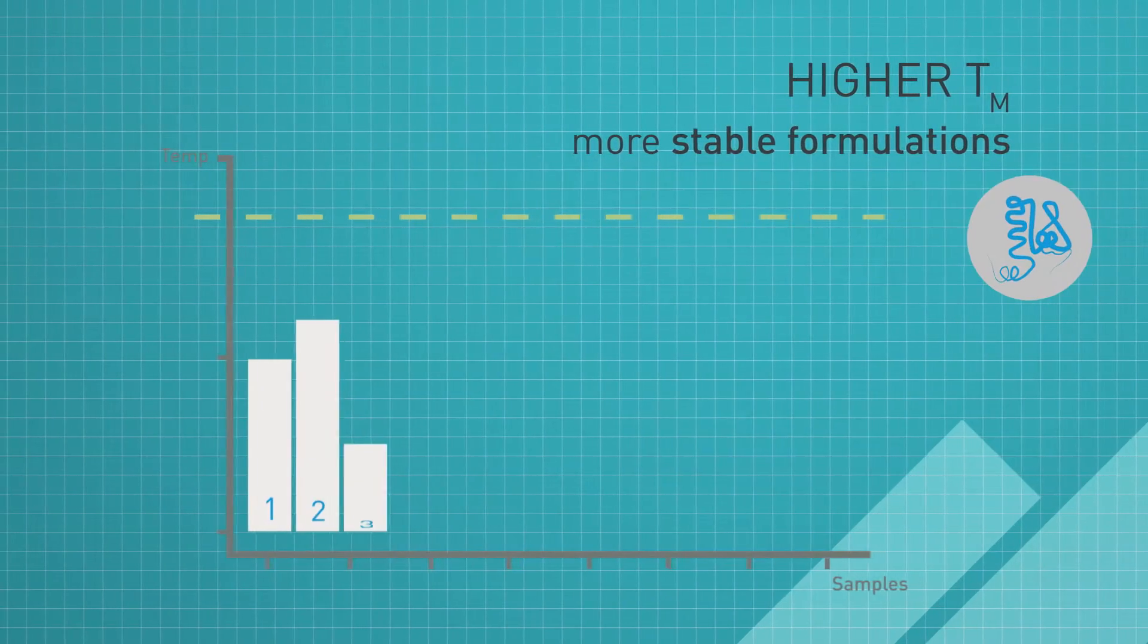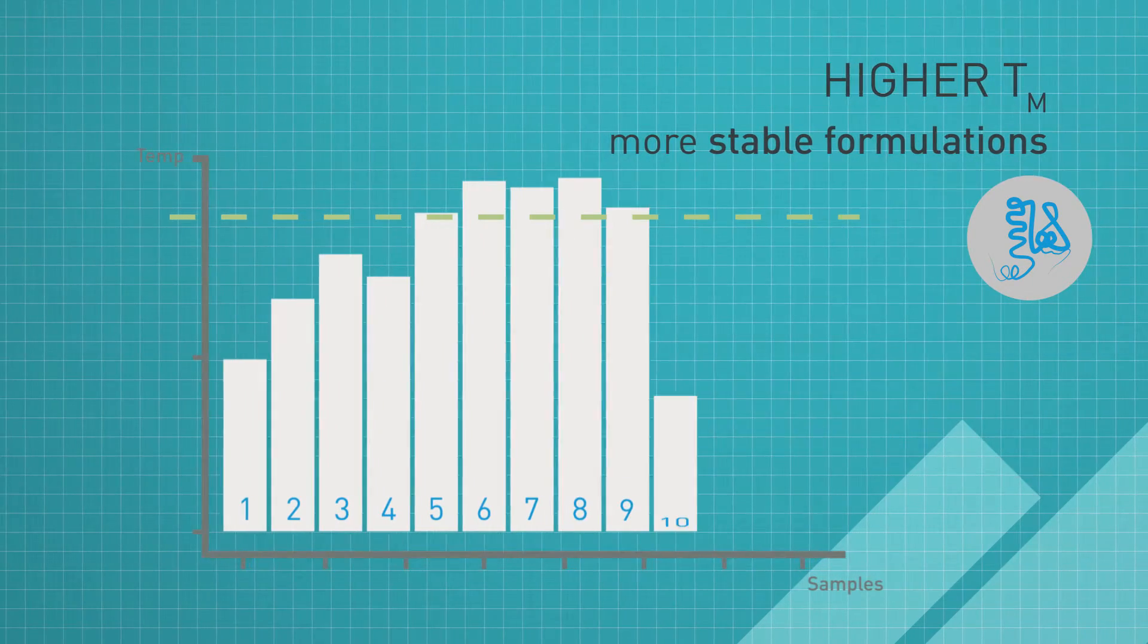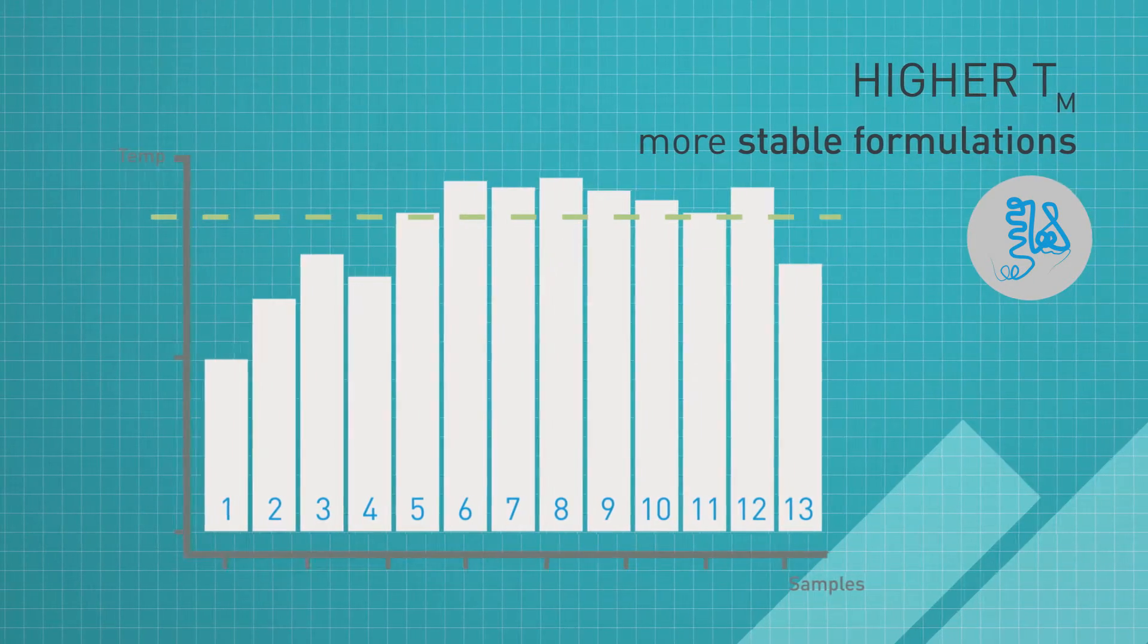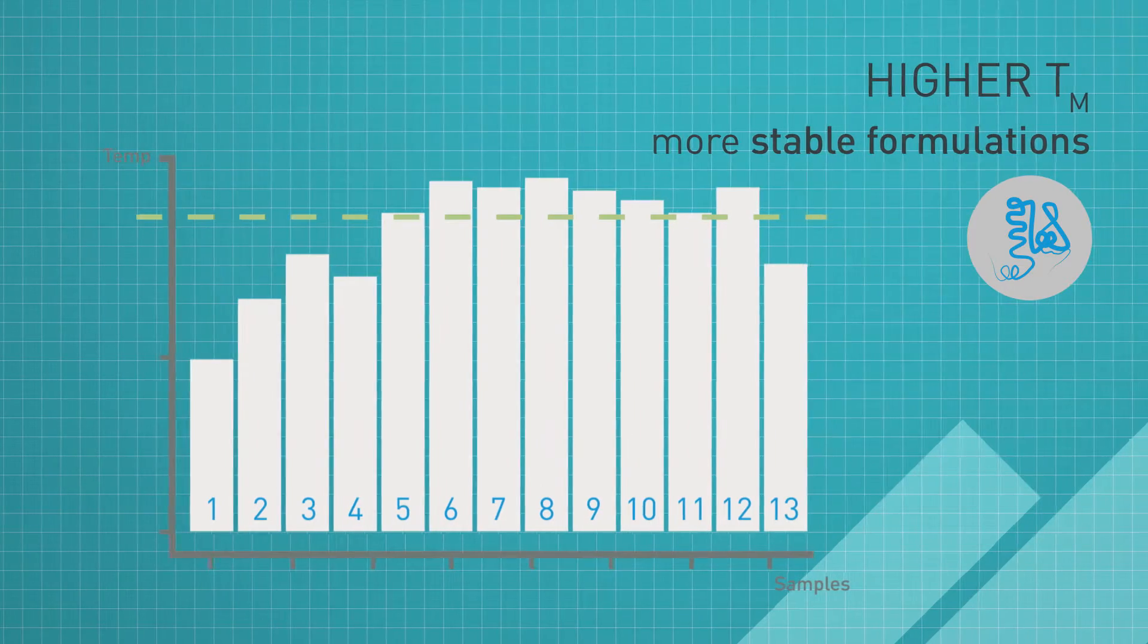Higher Tms correlate to more stable formulations. Even if a protein is irreversibly denatured by heat, Tm from DSC is still useful in rank ordering stability.